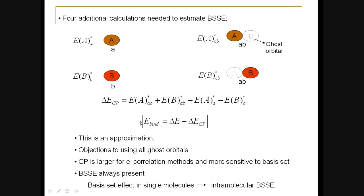You should note, however, that this is an approximation. And there are some objections to such an approach. And one of these objections is that one should not use all the ghost orbitals here. However, test cases have shown that one gets a better result if we do include all the ghost orbitals on B.